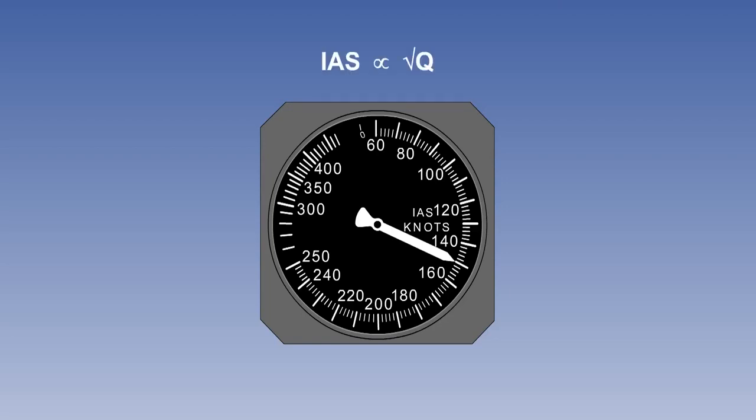This isn't a problem, since the pilot needs an indication of dynamic pressure, which is what the instrument, the airspeed indicator or ASI provides, being made in such a way that it indicates the square root of the dynamic pressure, in nautical miles per hour, known as knots, or in some old aircraft, in statute miles per hour.